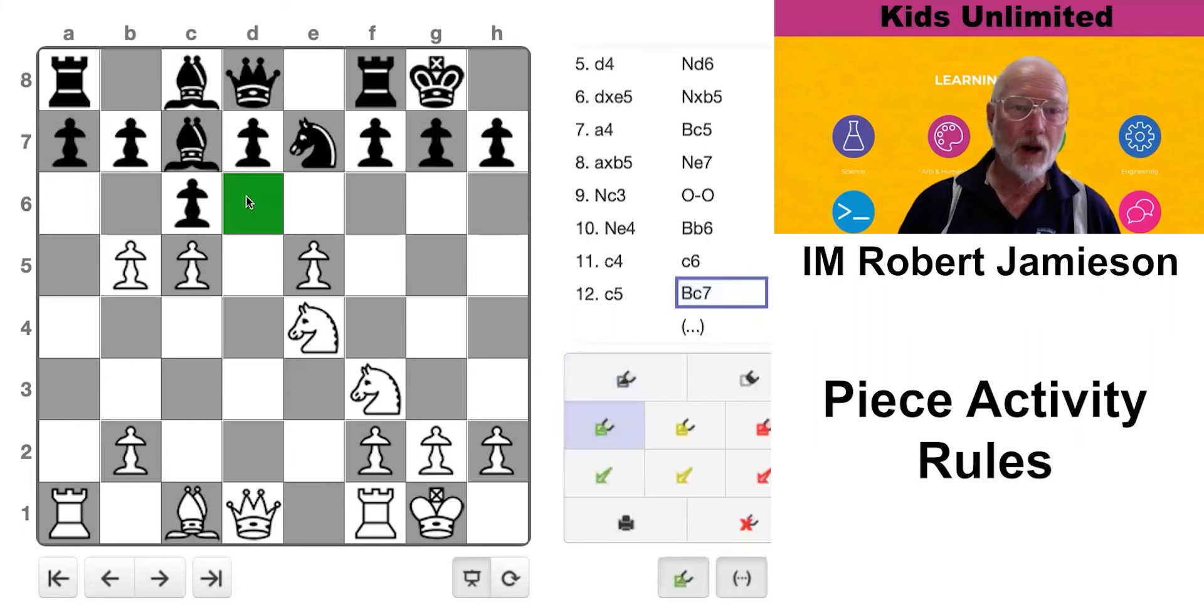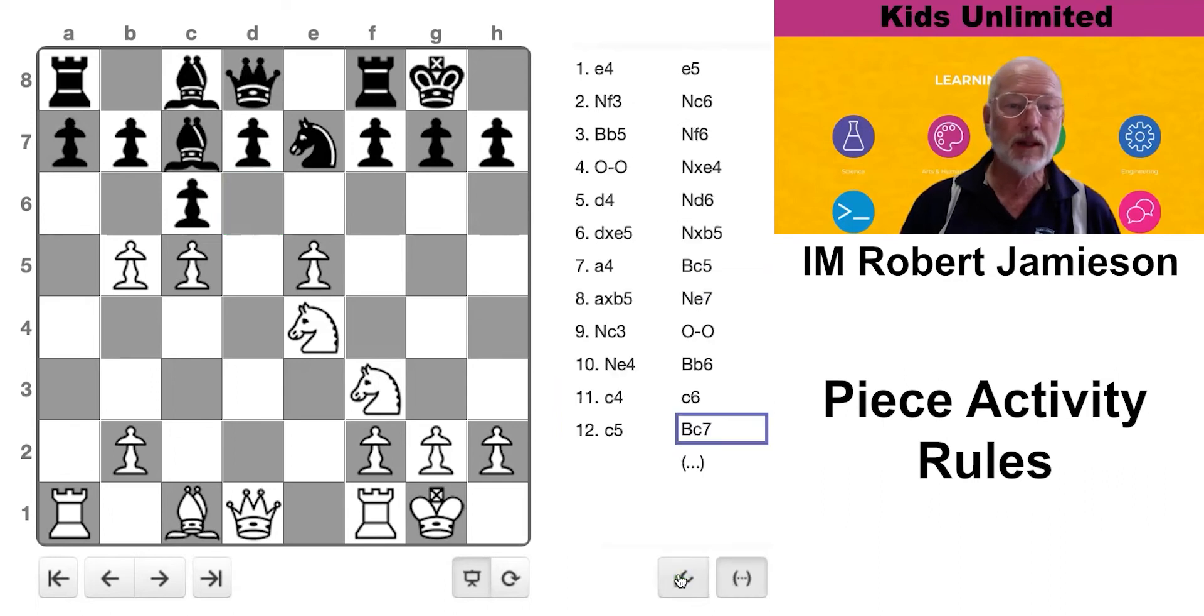Now look at this horrible, horrible hole on d6. It's where I'm controlling it. One day I might put a knight or something nice in there. In the meantime, however, I have another annoying move for him.